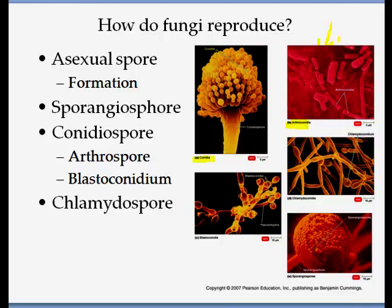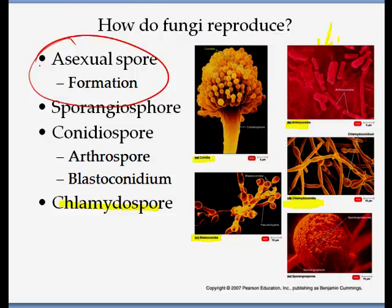Another kind of conidia spores are blastoconidia, which are buds coming off the parent cell. There is also another kind called chlamydospores. All these different ways of forming spores are asexual formation. A sporangium is the region or sac where spores are produced, and sporangiophores are the aerial hyphae where they are formed.